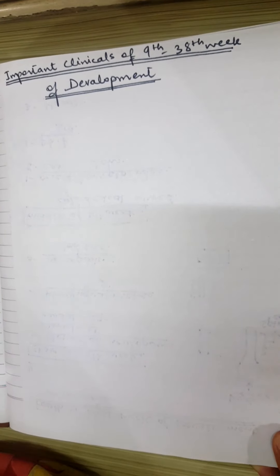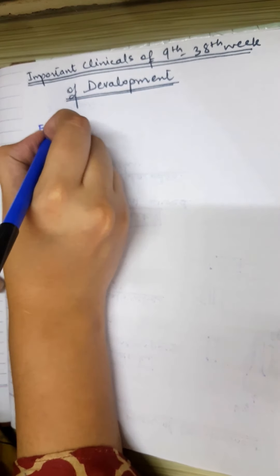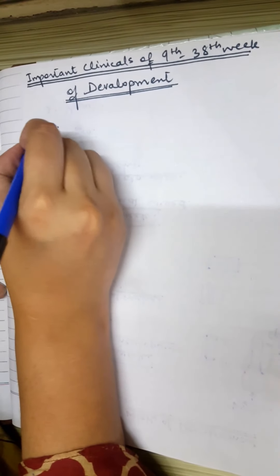We have completed the development from 9 to 38 weeks of development. Now we will discuss important clinical correlates regarding this period, the fetal period. The first is the Expected Date of Delivery, which we call EDD.